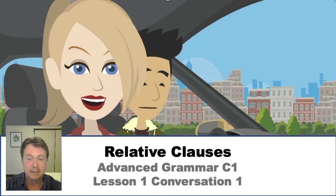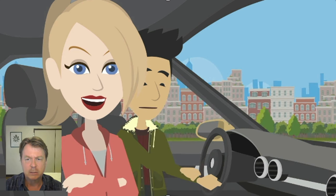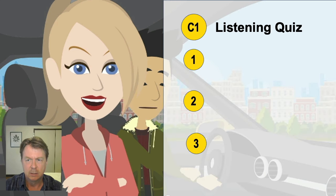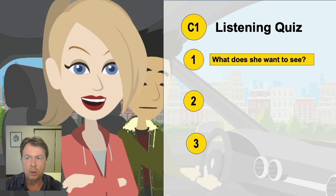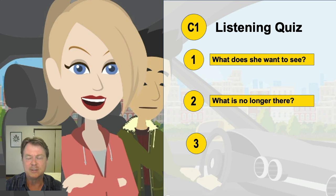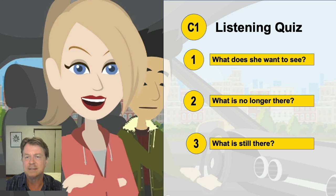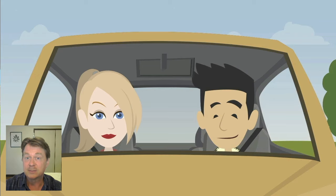Hello and welcome to the lesson. This is lesson one for conversation one and we are looking at relative clauses. In this first conversation, two people talk about an old neighborhood. As you listen, can you answer these three questions? Question one: what does the woman want to see? Question two: what is no longer there? And question three: what is still there? Now let's go ahead and listen and answer the questions.